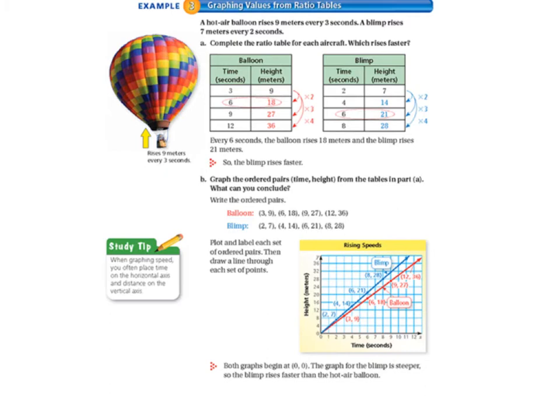So every 6 seconds, the balloon rises 18 meters and the blimp rises 21 meters. So when we have our time in seconds being the same, so that's what we look for, is something that's the same so we can compare the height and we can see that the blimp rises faster.